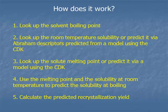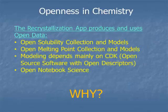How does it work? First, look up the boiling point without a solvent — that's easy, already done. Second, look up the room temperature solubility, which we have a pretty large collection for, and predict it with a model that works well enough for neutral organics, though not salts. Then look up melting points — we have about 27,000 open melting points, and a model to predict when we don't have it. When you put all these together, you can get a pretty good estimate of the solubility at the boiling point of the solvent, and from there calculate the recrystallization yield.